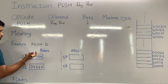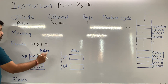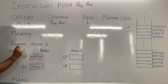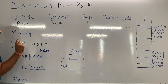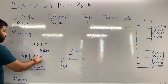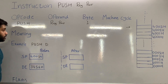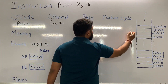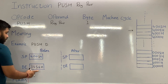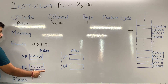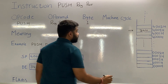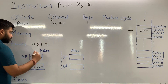When PUSH D is executed, the content of DE will be stored in the stack. The stack pointer is currently pointing at 4003H. When this instruction is executed, the stack pointer will be decremented by one, so its value will become 4002H. Now the stack pointer is pointing to 4002H. The higher byte of the DE pair, which is 34H, will be stored at memory location 4002H.